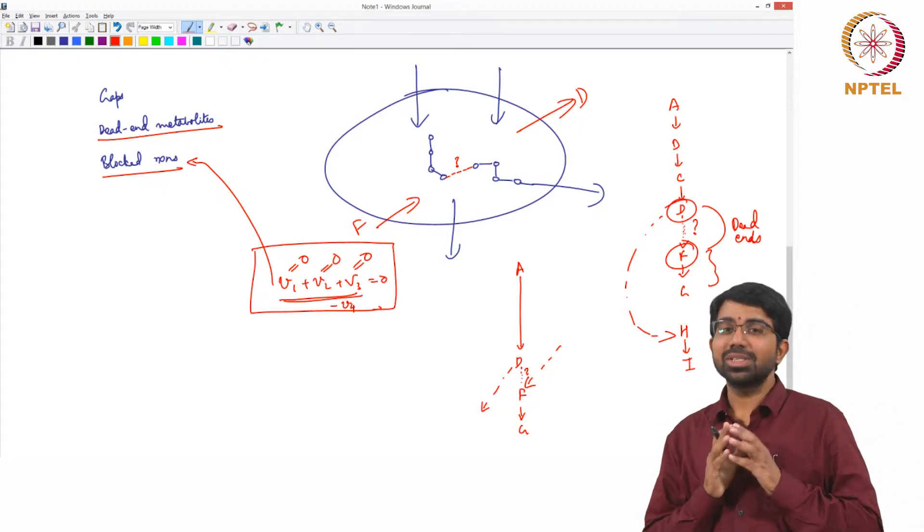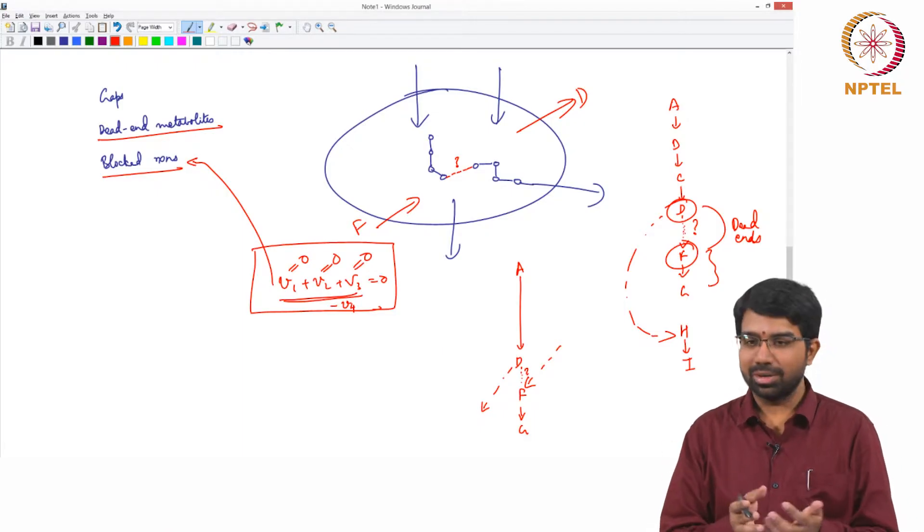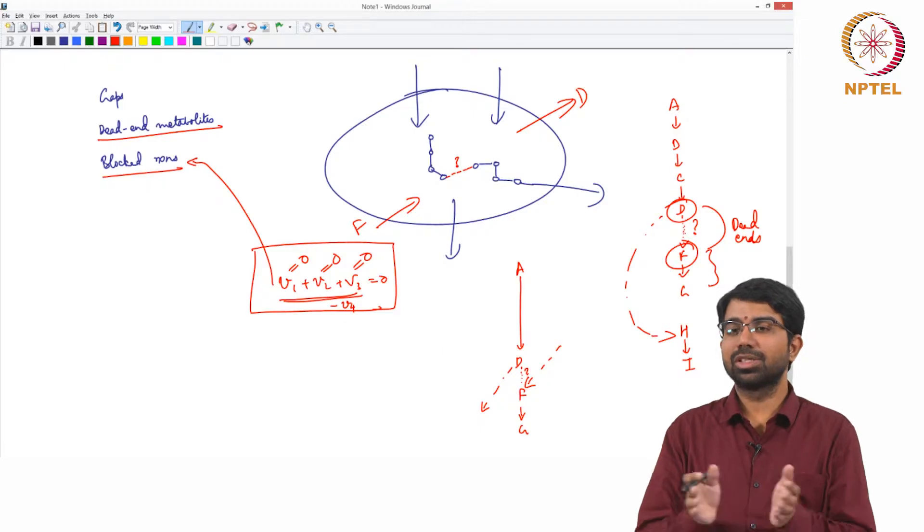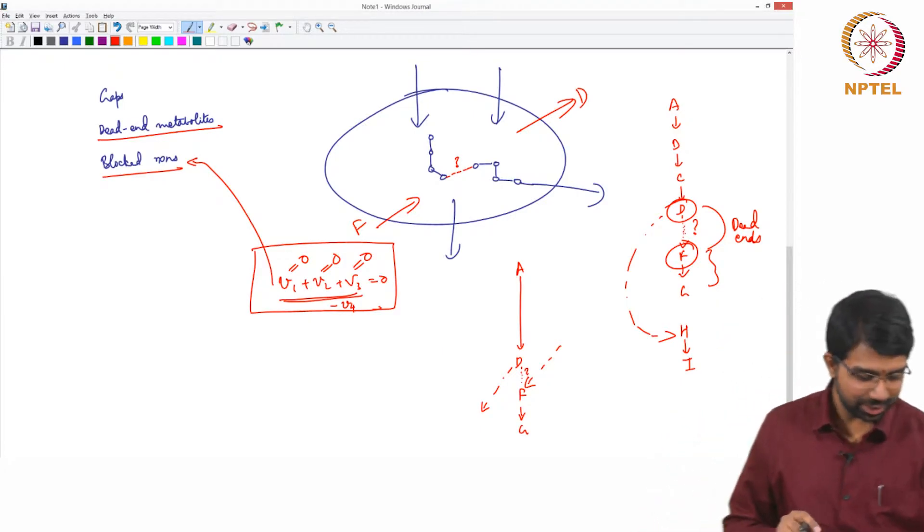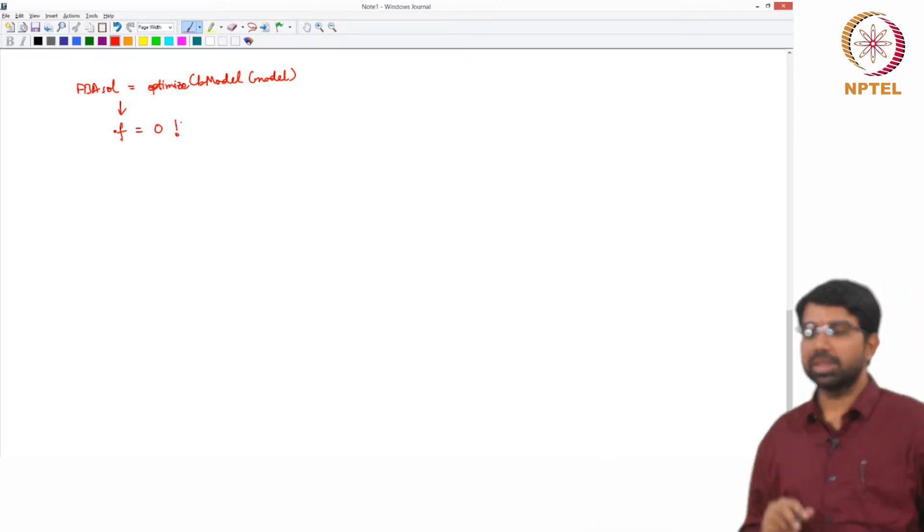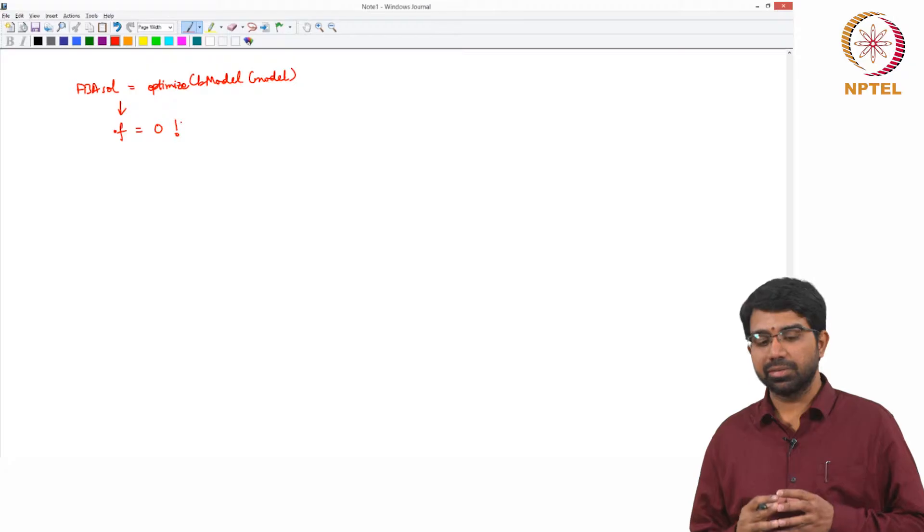So the most important thing you need to really worry about when you are performing FBA is, the first thing you will encounter is you take, you build a model or you download a model and you do optimize CB model, you will find that you get zero growth rate. How do you fix it? So common problem that everybody encounters, practically what do you think this could be because of, what are the reasons that might give you zero growth rate?